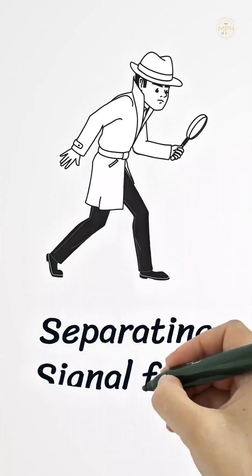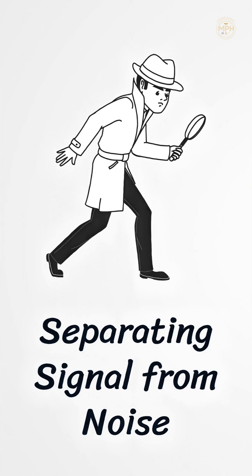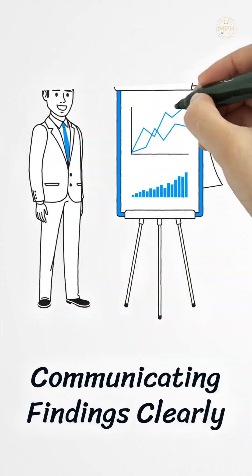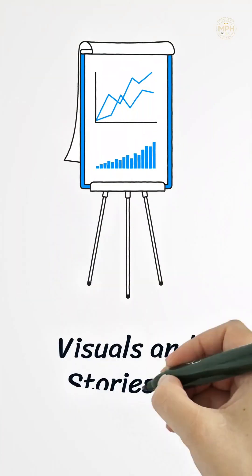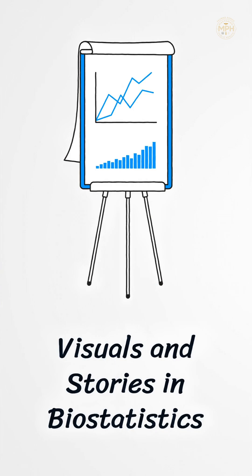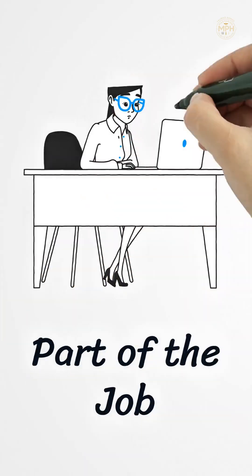We need experts who can separate signal from noise and avoid false positives that can mislead science and policy. Biostatistics also helps communicate findings clearly. It's not enough to crunch numbers, we need visuals and stories that make results understandable and actionable. And that's part of the job.